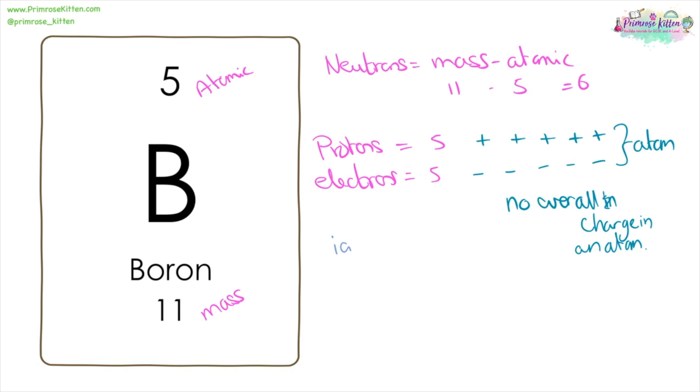An ion is going to have lost or gained electrons. So for example, if we have our boron again with our one, two, three, four, five positive, and one, two, three, four, five negative charges, if it loses an electron, it now no longer has the same number of positive and negative charges, so it's going to be charged. It has created an ion.